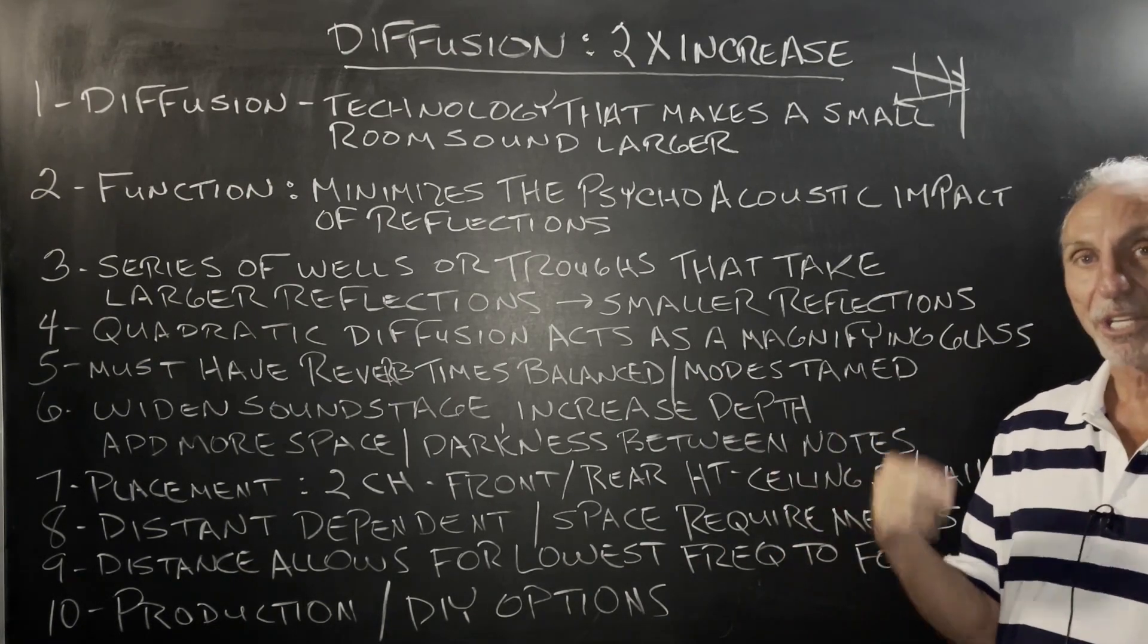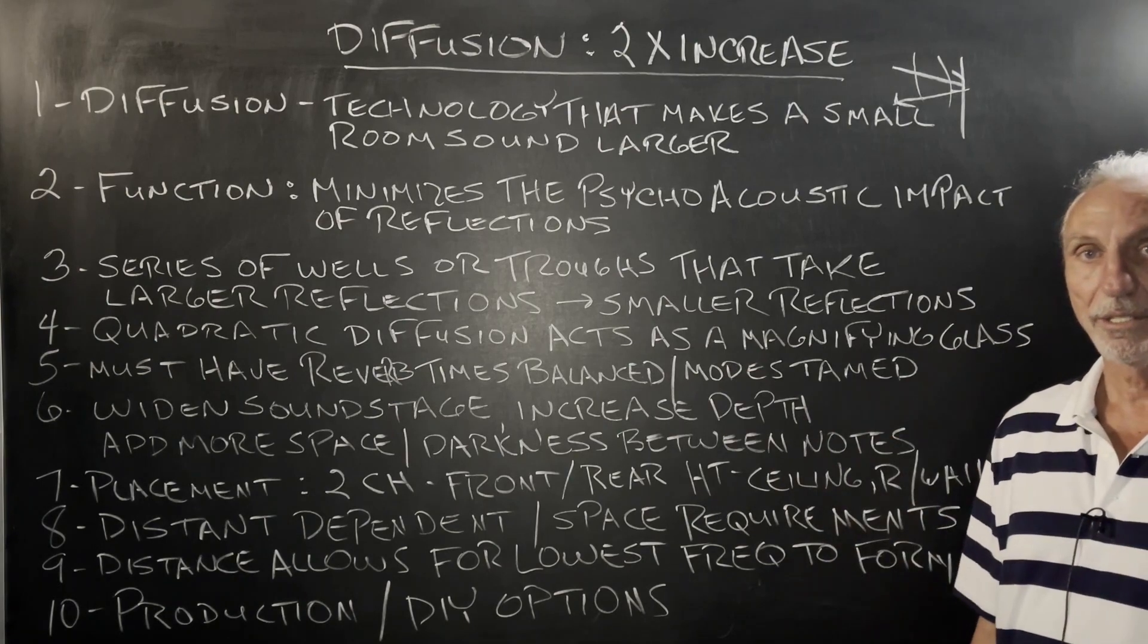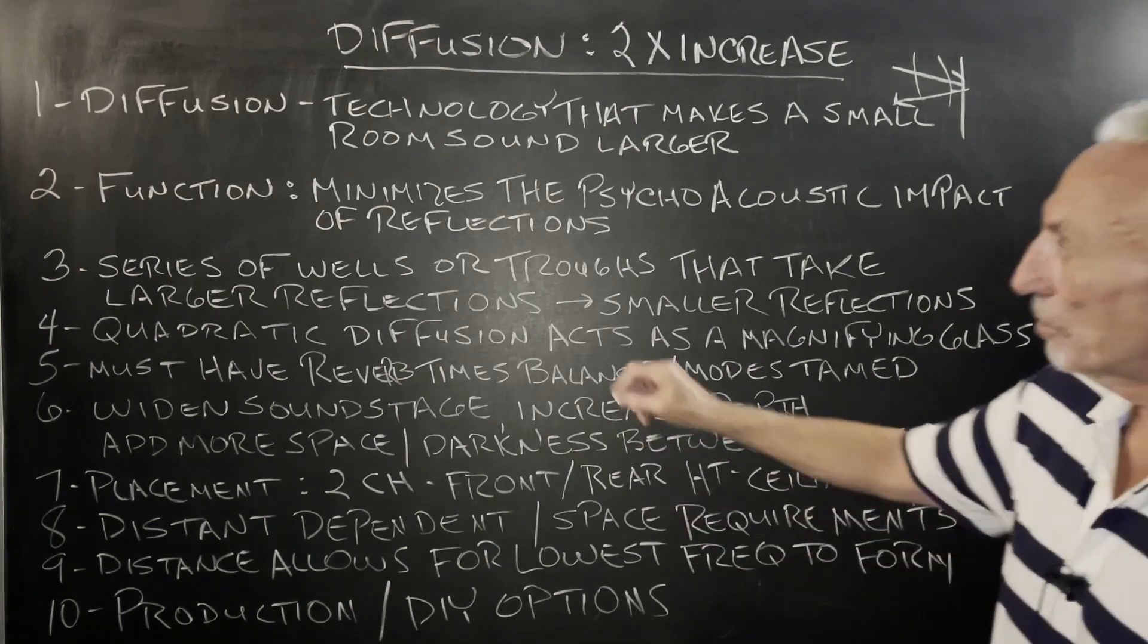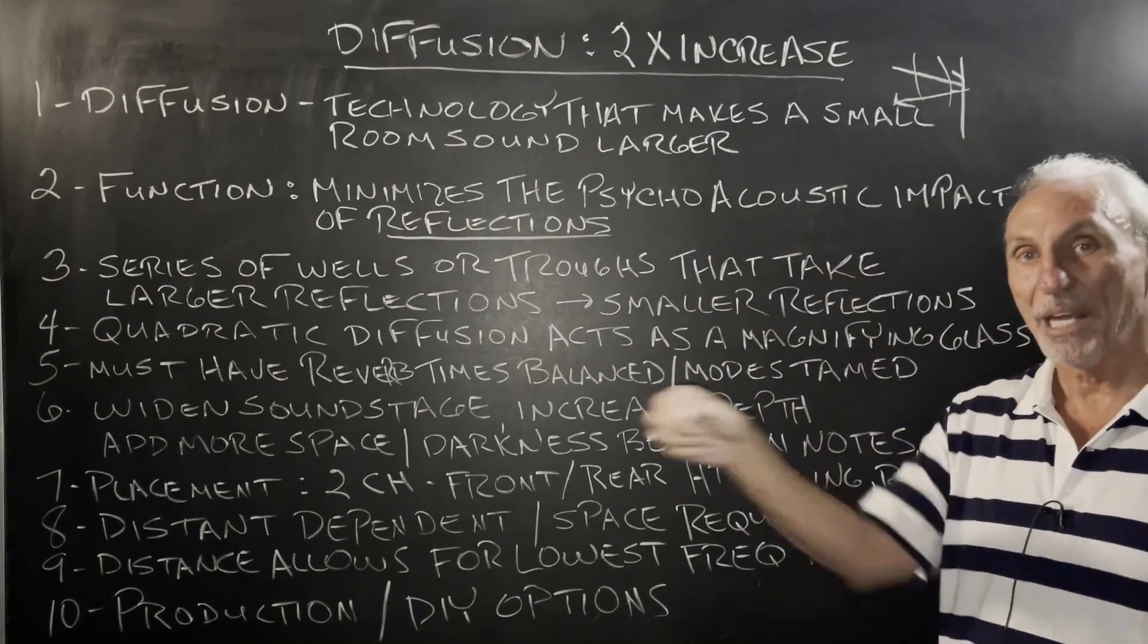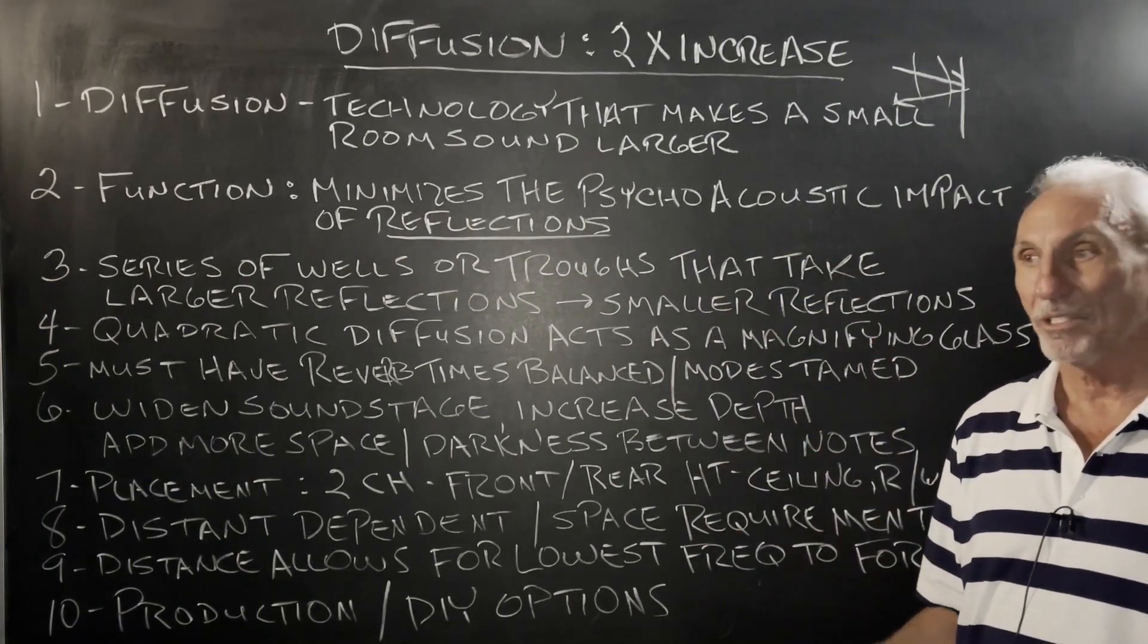So reflections help us localize distance. So if we can control reflections, we can have an impact on the perception of distance, how far away things are.